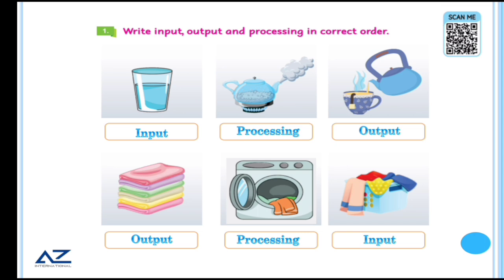Next, you will have to write input, output and processing in correct order. Number 1, you will have water, you will have input, you will have boil, you will have process, and output you will have tea. You will put tea basket is in the basket, you have put it in the washing machine and it is processed and the output is dhul.